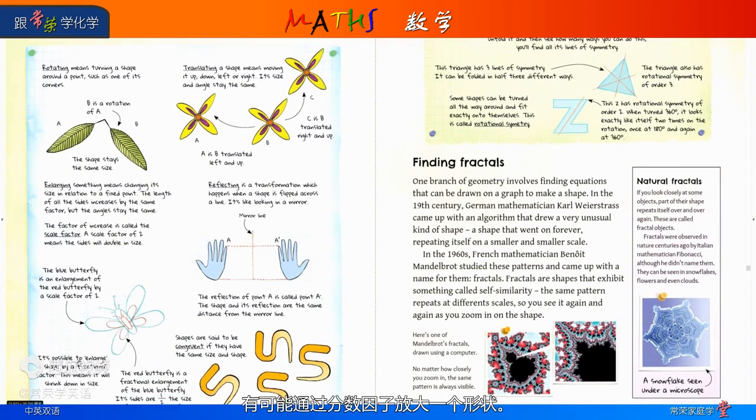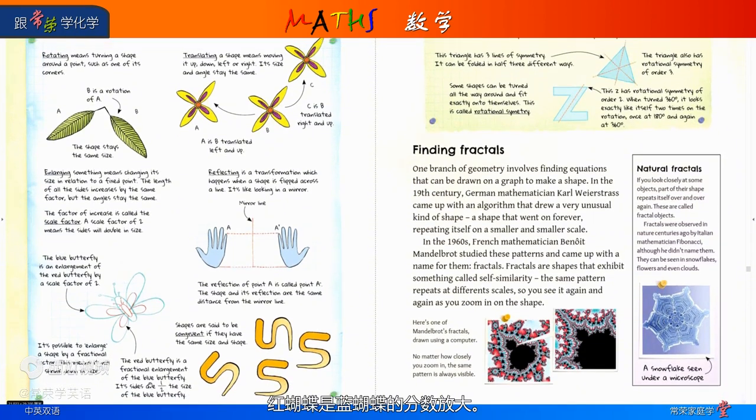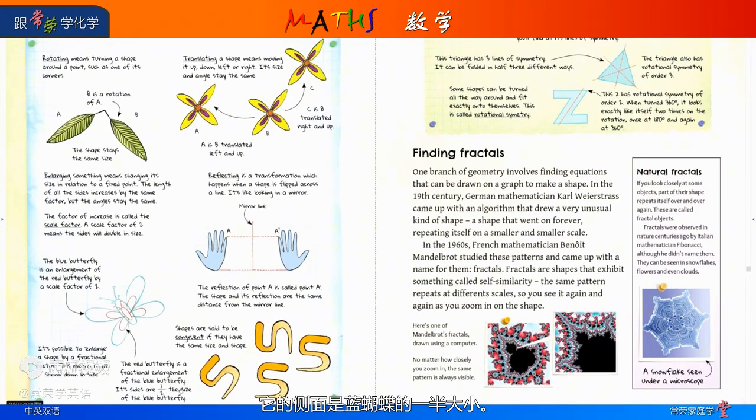It's possible to enlarge a shape by a fractional factor. This means it will shrink down in size. The red butterfly is a fractional enlargement of the blue butterfly. Its sides are one half the size of the blue butterfly.